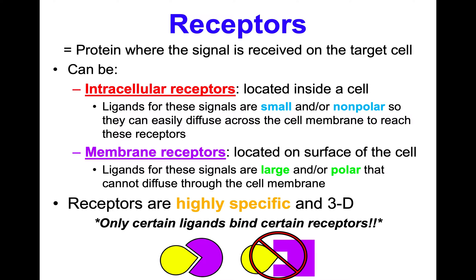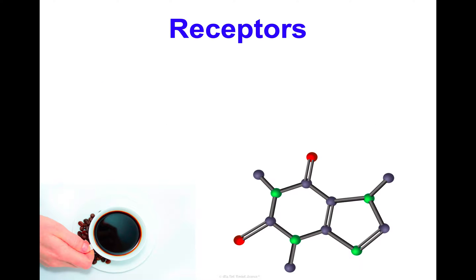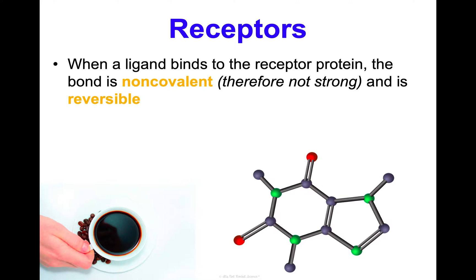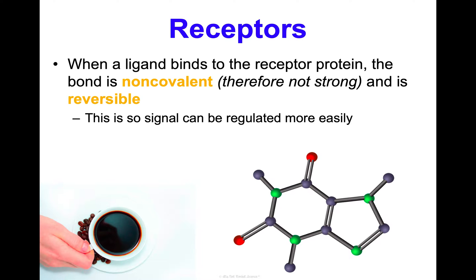One last thing about receptors: when a ligand binds to a receptor protein, the bond is non-covalent, so it's not very strong and it's reversible. It's not a permanent connection. This allows us to regulate it more easily because we can make things bind and not bind a lot more simply.